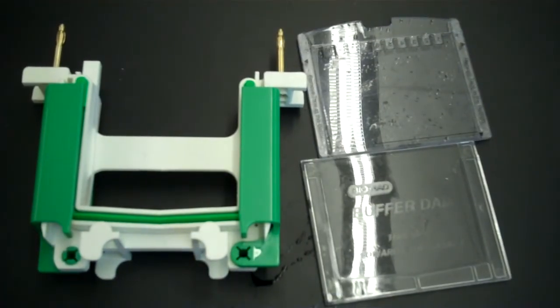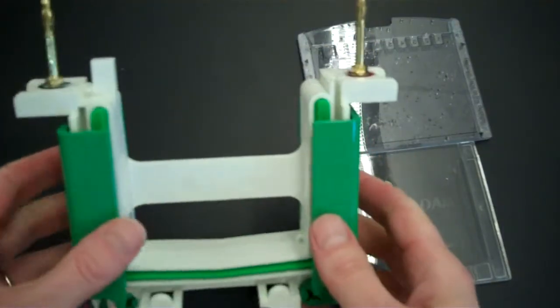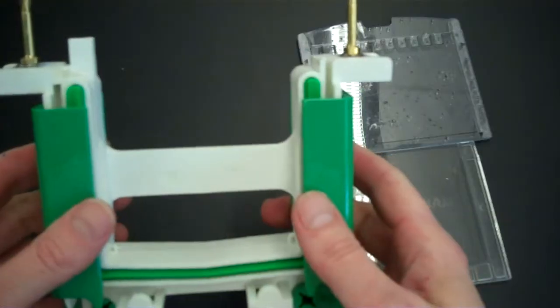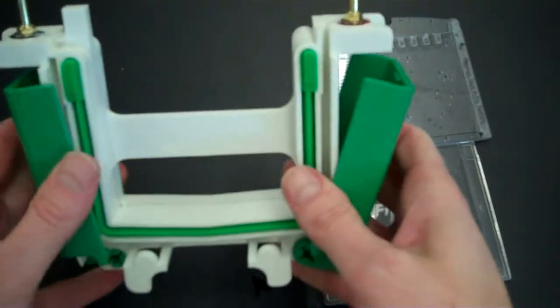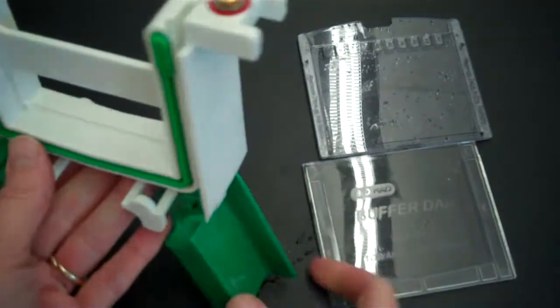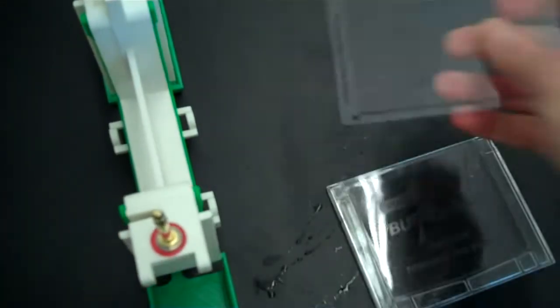So what we're going to do next is assemble the inner chamber. For that, you will need this piece of equipment that came within your electrophoresis box. And it has these little green wings. And you're going to open them up. Next, you have your gel.